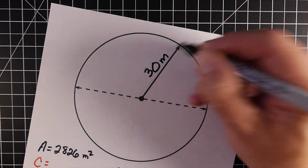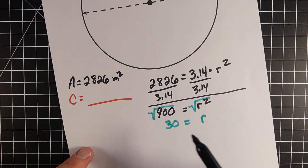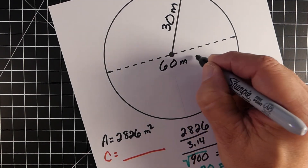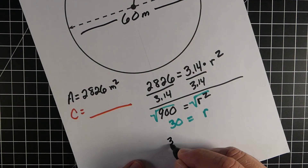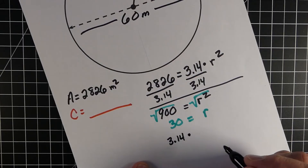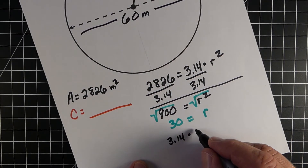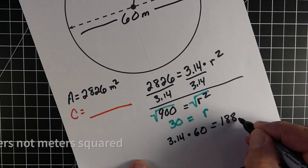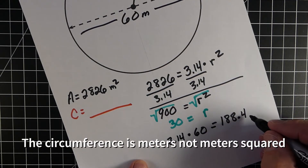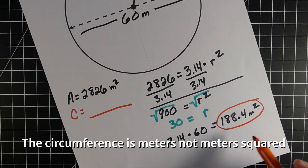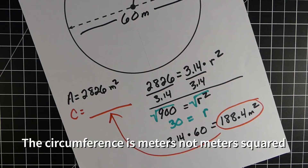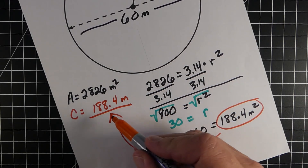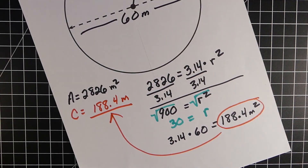To find the circumference, we need the diameter. We just double the radius: if the radius is 30, the diameter is 60 meters. So for the circumference, it's pi — 3.14 — multiplied by our diameter of 60. Multiplying those together gives us 188.4, and this would be meters — just meters, not meters squared, since circumference is a distance. So the circumference is 188.4 meters, the distance all the way around that circle.